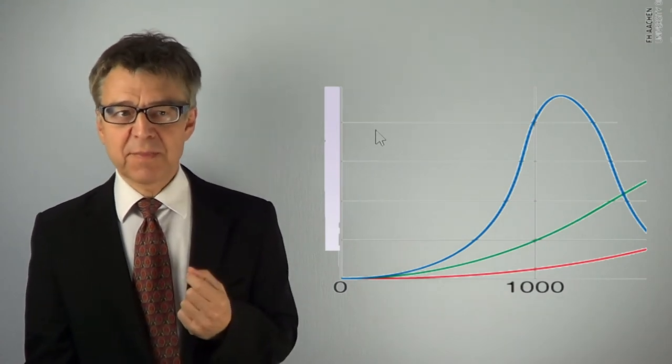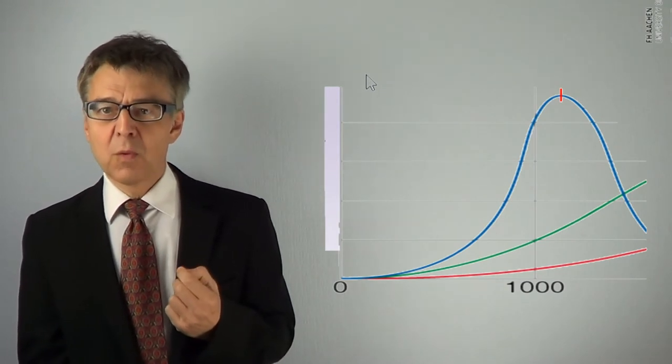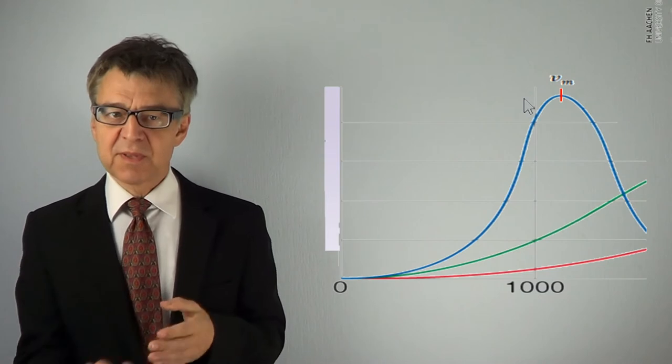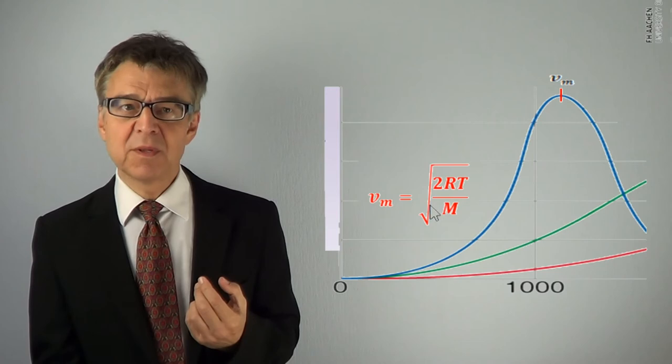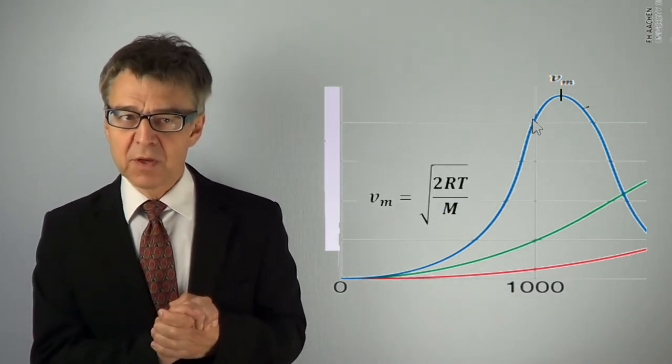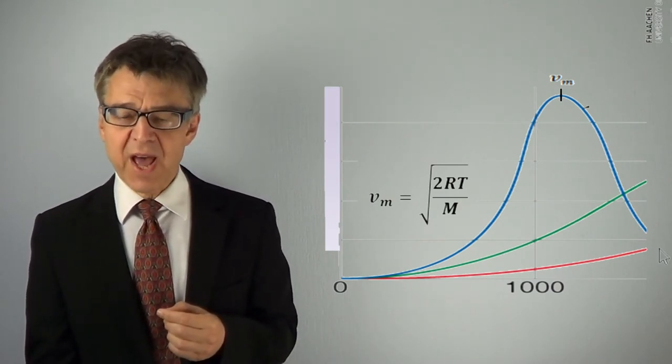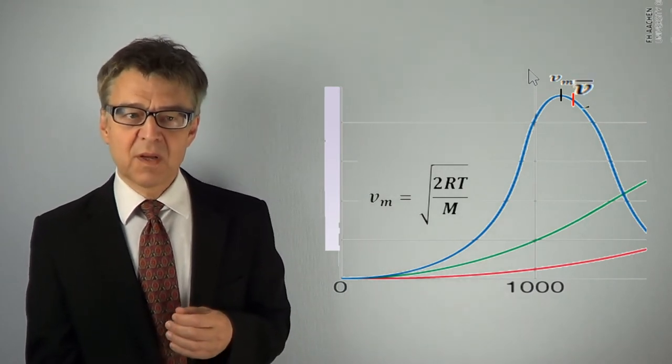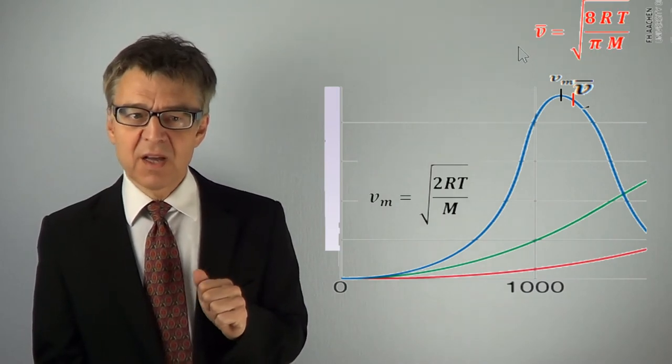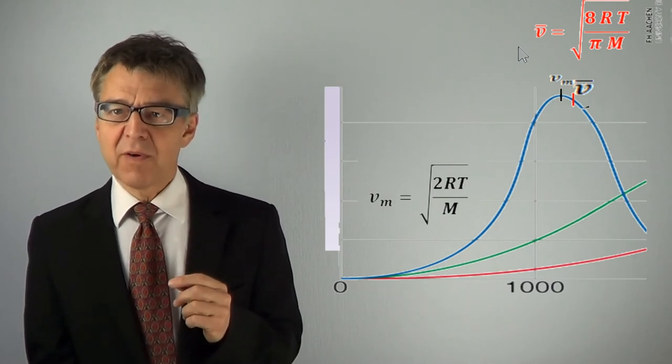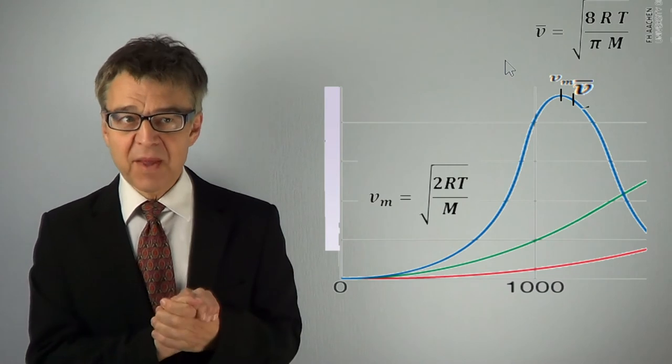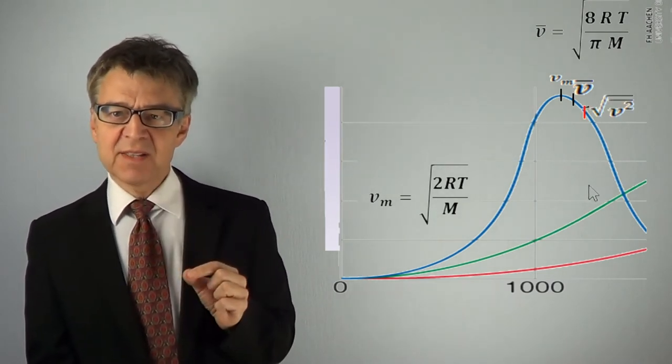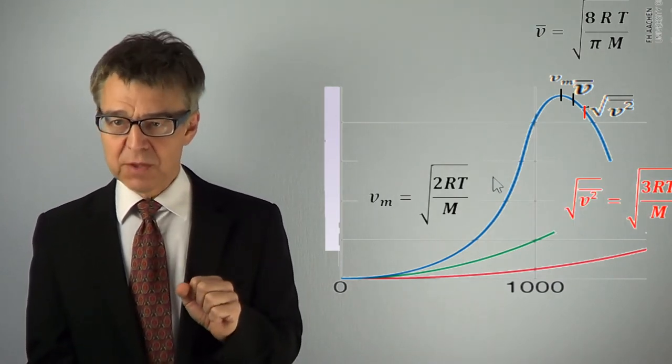There are three velocities that deserve our special attention. One, the most probable velocity V sub m corresponds to the maximum in the Maxwell Boltzmann's distribution curve. By curve sketching, we can easily find the extremum by setting the first derivative to zero. We obtain the expression square root of 2RT over m. The most important velocity is the average velocity V bar, slightly right of the maximum. V bar equals root of 8RT over pi times m. There is another important velocity, it is the root mean squared velocity rms. This is the velocity of the particles that exhibit exactly the average energy.